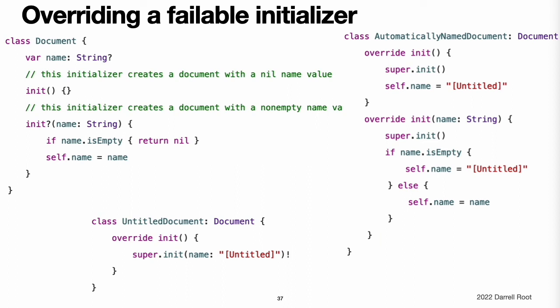Overriding a failable initializer. You can override a superclass failable initializer in a subclass just like any other initializer. Alternatively, you can override a superclass failable initializer with a subclass non-failable initializer. This enables you to define a subclass for which initialization cannot fail even though initialization of the superclass is allowed to fail. Note: if you override a failable superclass initializer with a non-failable subclass initializer, the only way to delegate up to the superclass initializer is to force unwrap the result of the failable superclass initializer. Note: you can override a failable initializer with a non-failable initializer, but not the other way around.